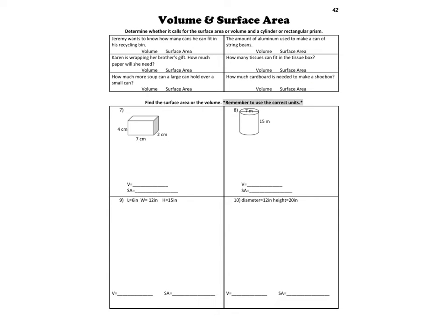All right, so one of the big things that you have to know is whether to use volume or surface area with word problems. So look, Jeremy wants to know how many cans he can fit in his recycling bin. That would be volume because he's filling the recycling bin with the cans. The amount of aluminum used to make a can of string beans, that would be surface area because that would be covering the outside. Karen is wrapping her brother's gift, how much paper will she need? Again, she's covering, so that would be surface area. How many tissues can fit in the tissue box? That's volume. How much more soup can a large can hold over a small can? Volume because the can will be full. And then finally, how much cardboard is needed to make a shoe box? And that would be surface area.